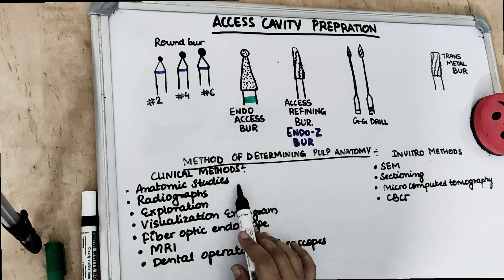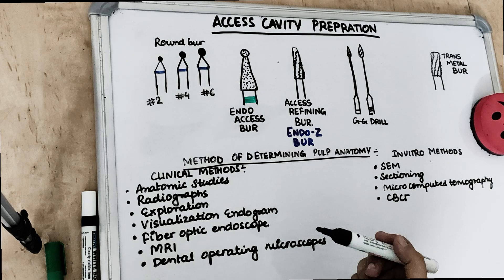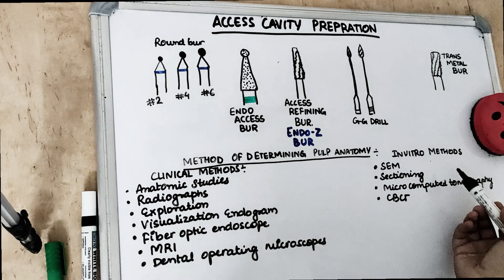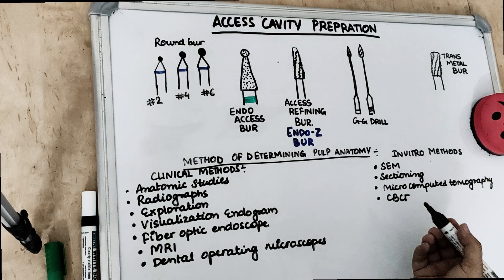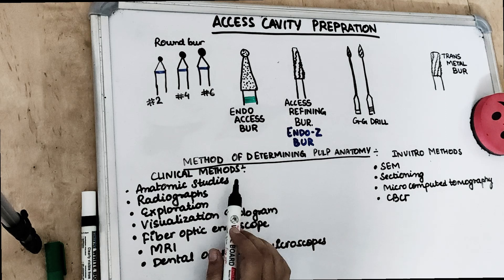The clinical methods include anatomic studies, radiograph, exploration, visualization, endogram, fiber optic endoscopy, magnetic resonance imaging (MRI), and the dental operating microscope. For in vitro methods, we have the scanning electron microscope, sectioning, microcomputed tomography, and cone beam computed tomography (CBCT).